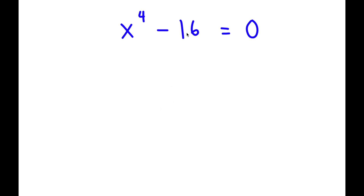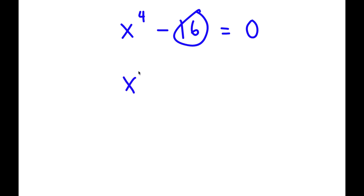In this problem, I have x to the power of 4 minus 16 is equal to 0. To solve this problem, I'm going to first rewrite 16 as 4 to the power of 2. So now I have x to the power of 4 minus 4 to the power of 2 is equal to 0.